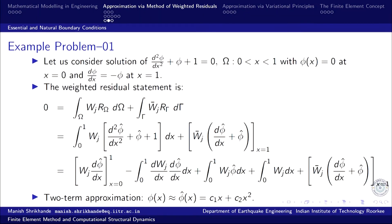Let us look at a simple example of essential and natural boundary conditions. Consider a second-order differential equation: d²φ/dx² + φ + 1 = 0, on the domain x from 0 to 1. The boundary conditions are: φ = 0 at x = 0 (the essential boundary condition), and dφ/dx = −φ at x = 1 (the natural boundary condition).